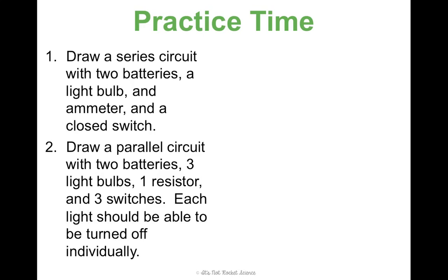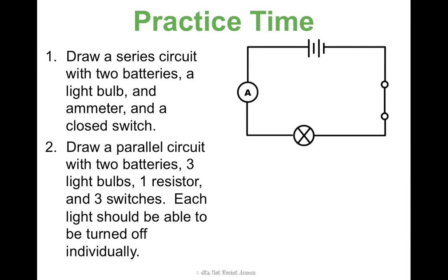Let's practice. First, draw a series circuit with two batteries, a light bulb, an ammeter, and a closed switch. Take a minute, pause, and try this — then press play when you're ready. Here's my series circuit: my big rectangle, two batteries back to back, a light bulb, an ammeter, and a closed switch. The order doesn't matter — if you put yours in a different spot, that's fine.